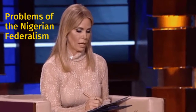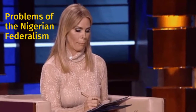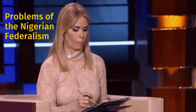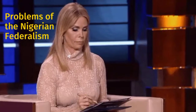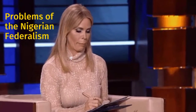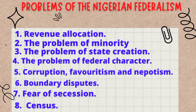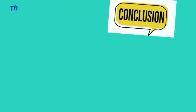Now let's look at the various problems of Nigerian federalism. Among them: revenue allocation — at different periods governments have set up different commissions to advise on an acceptable revenue-sharing formula. There is also the problem of minority issues, the problem of state creation, problem of federal character, corruption, favoritism and nepotism, boundary disputes, fear of secession, and the problem of census manipulation when some regions or states inflate their census figures.